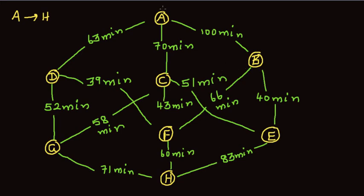Let's try path A to B, B to E, and E to H. The distance from A to A is 0. A to B is 100 minutes, B to E is 40 minutes, so 100 plus 40 is 140, and 140 plus 80 is 220. So going this way it is 223 minutes.